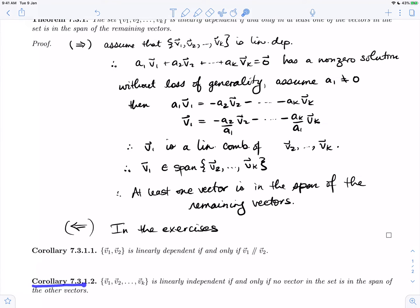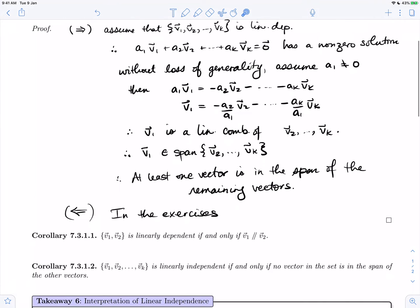Corollary 7.3.1.2 says that the set of v1 through vk is linearly independent if and only if no vector in the set is in the span of the other vectors. That's just a rephrasing of the theorem in terms of linear independence rather than dependence.